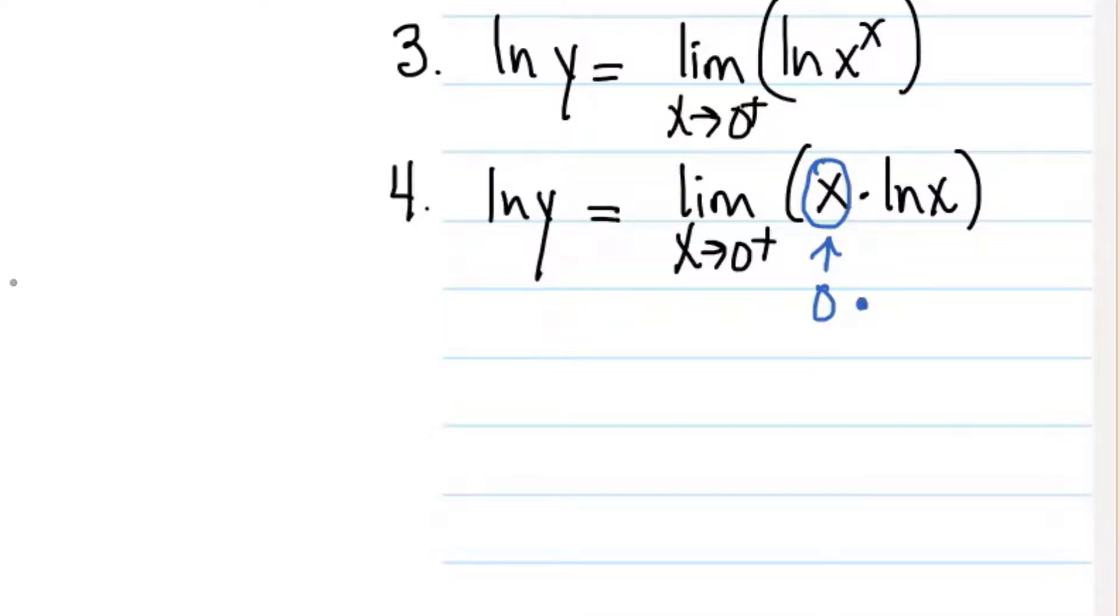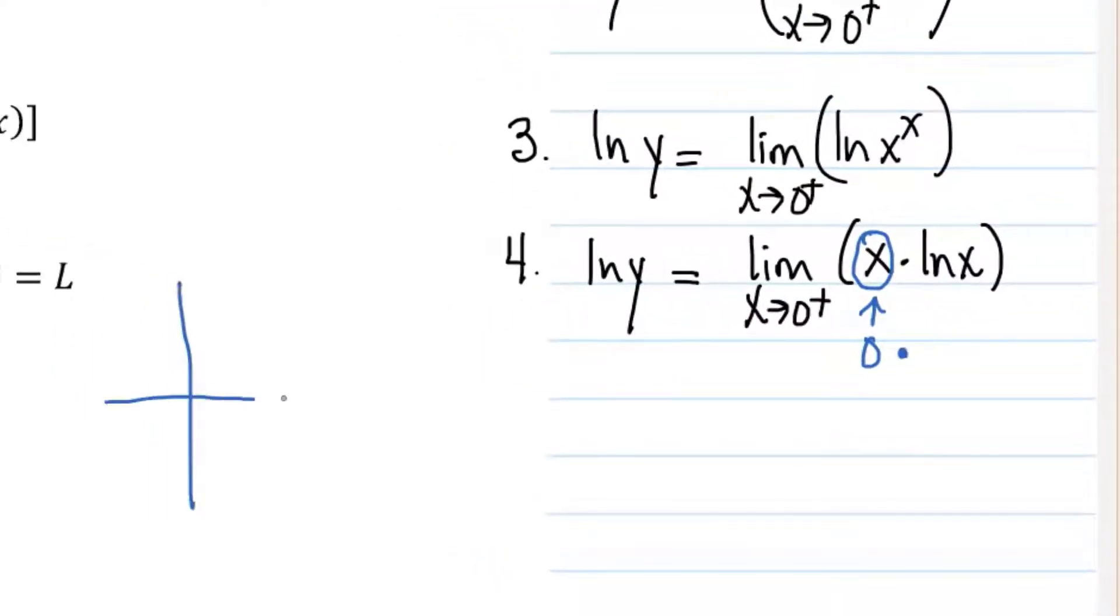Think about the graph of the natural log function. What does it look like the limit as x approaches zero from the right would be for that function? Negative infinity. Very good.